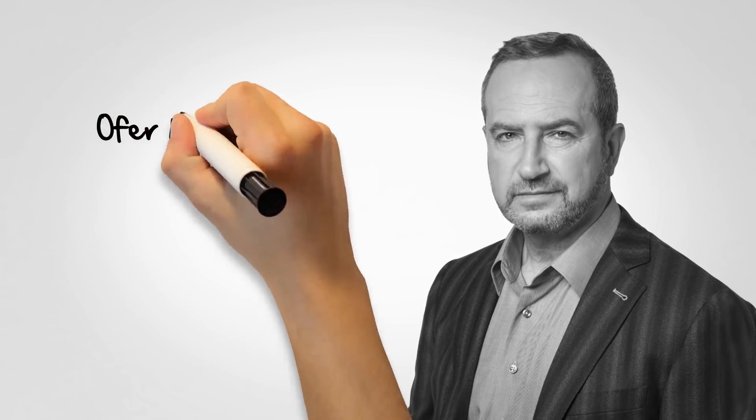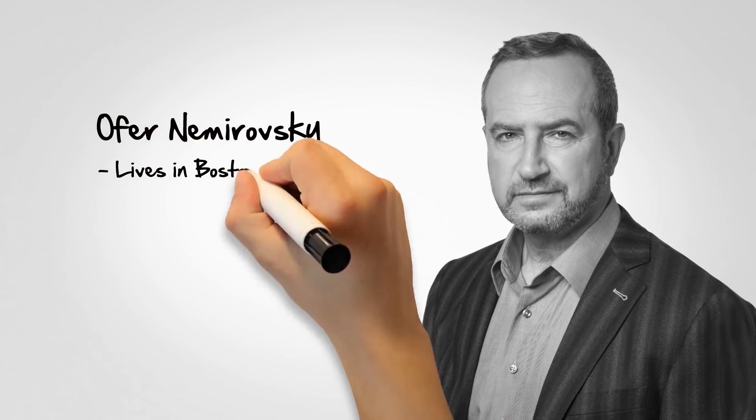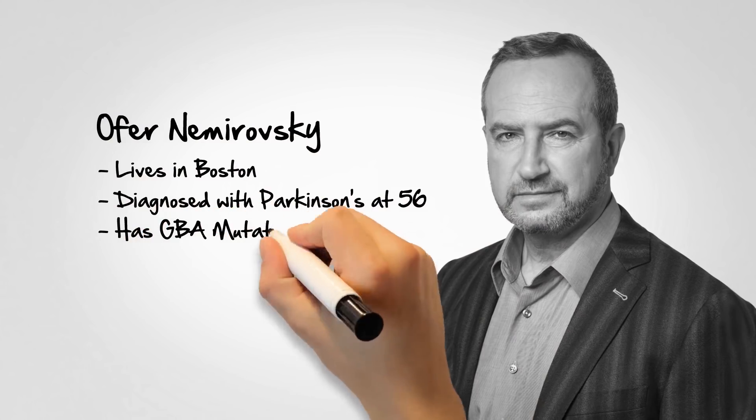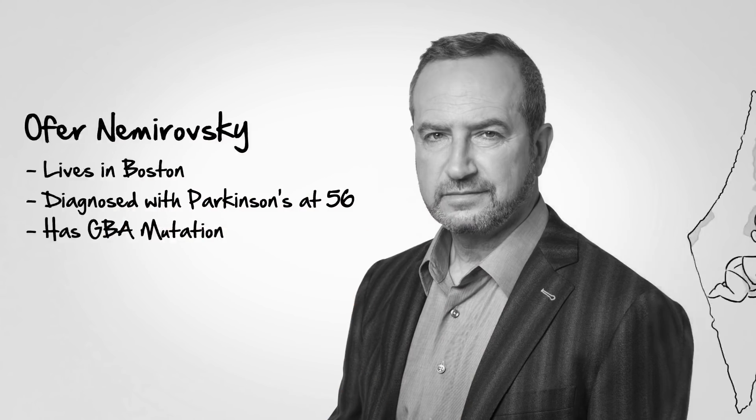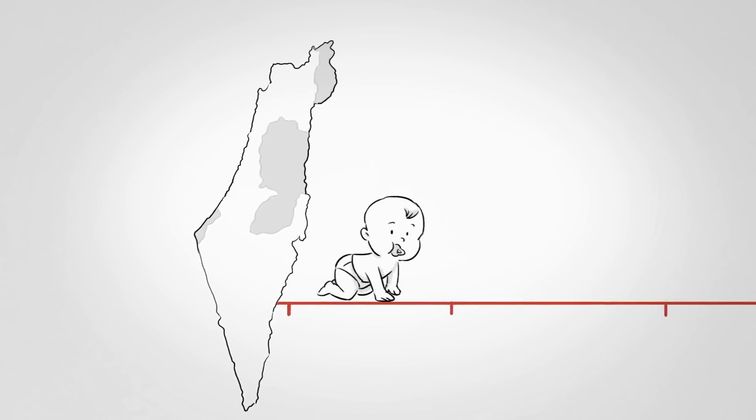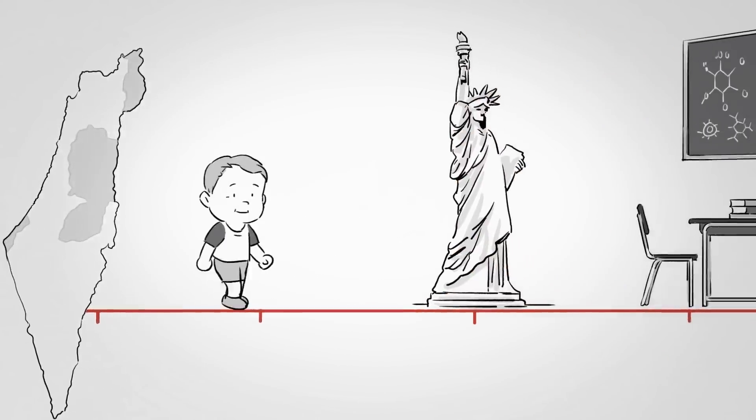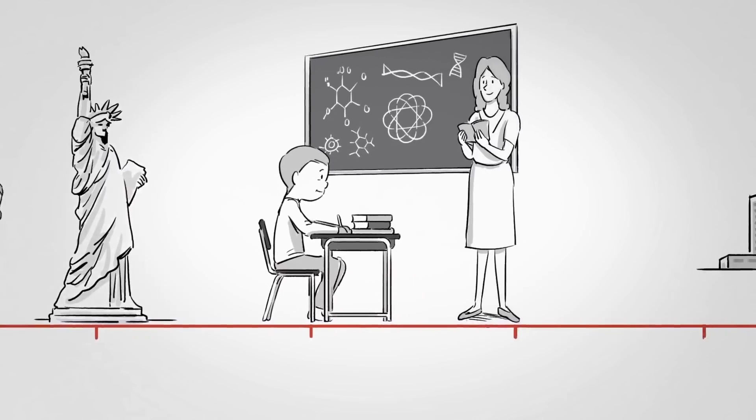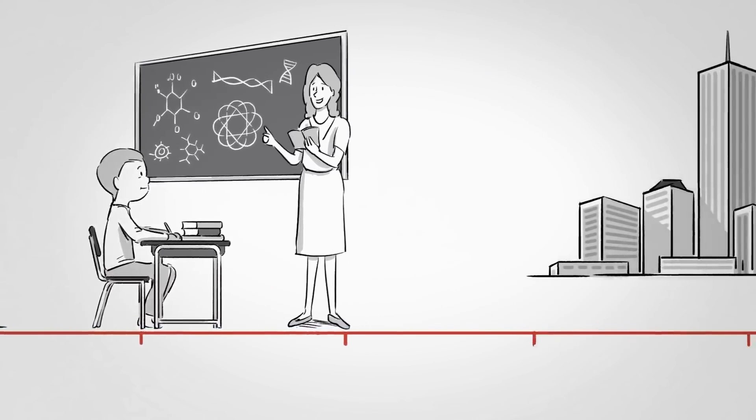First, meet Ofer. Hi, I'm Ofer Nemirovsky. I live in Boston with my wife and three children, and I have Parkinson's disease with a GBA mutation. I was born in Israel and came to the States when I was four years old. I grew up in Queens, New York, and went to high school in the Bronx at a math and science high school for nerds like myself.